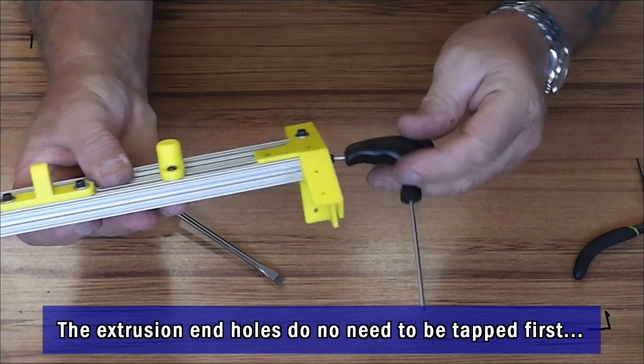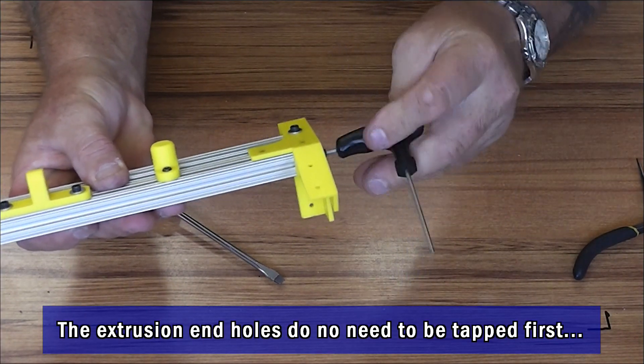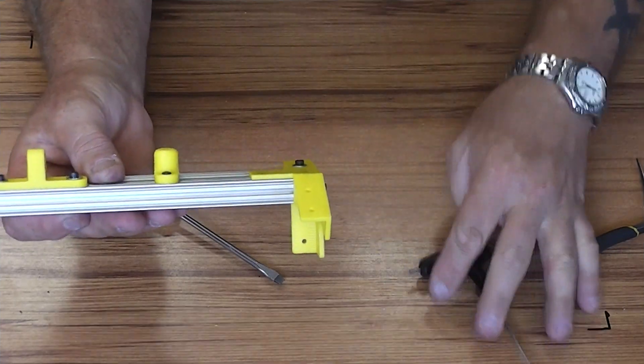So with the end grain one, tighten it up first. That should pull everything into square.